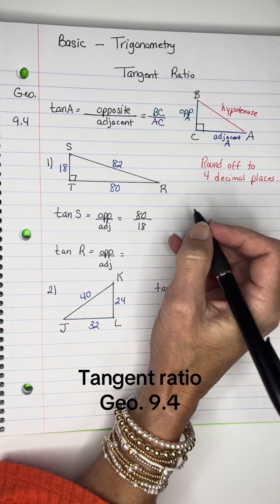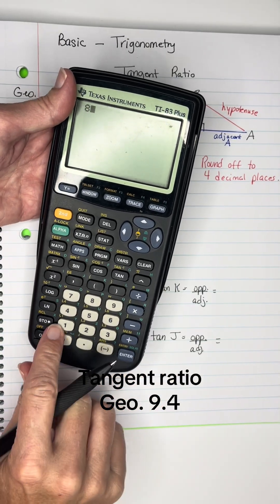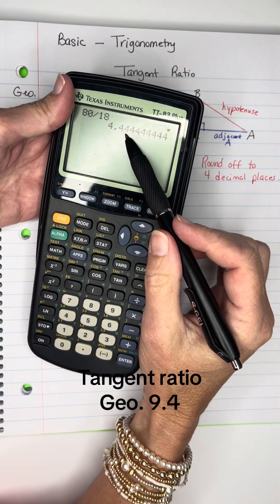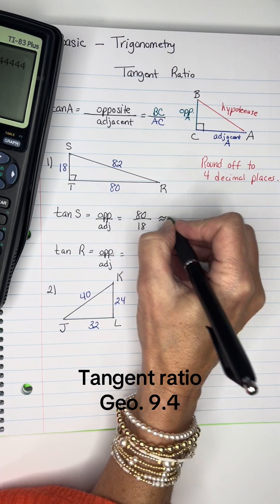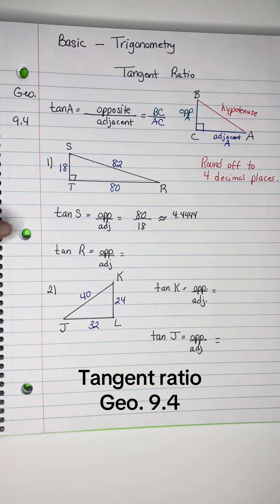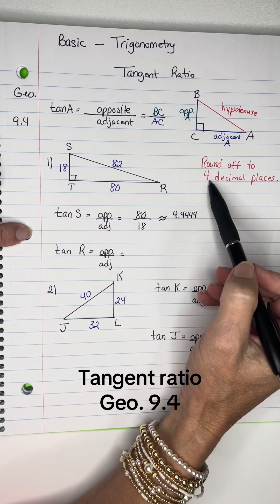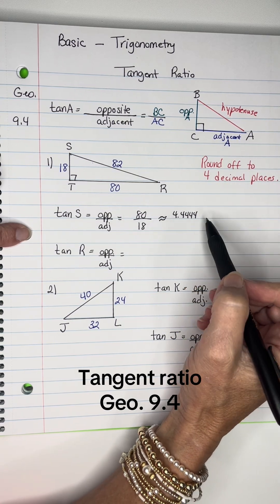So we have 80 over 18. Dividing that gives us 4.4444. When calculating a tangent ratio, we round to four decimal places. Unless stated otherwise, always use four decimal places.